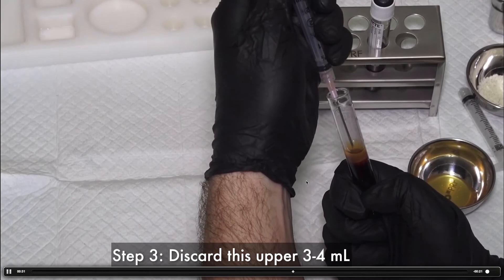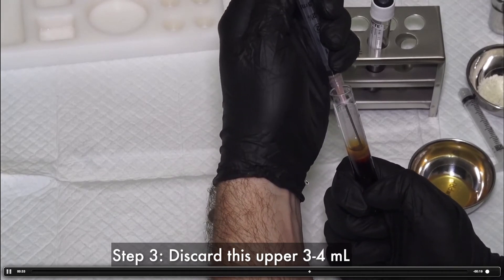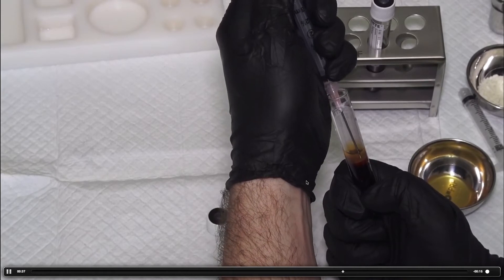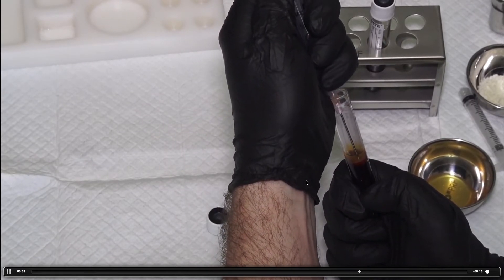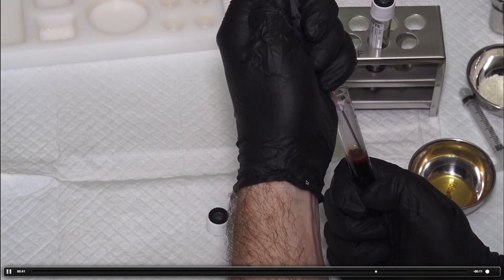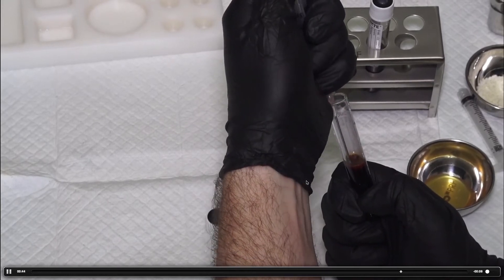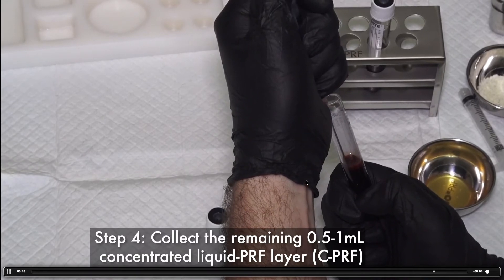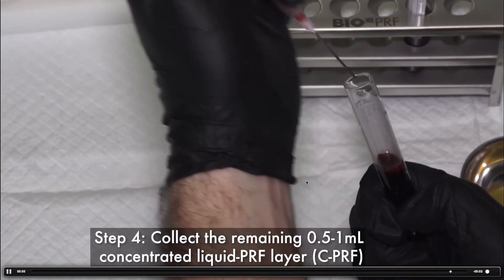So you remove the upper platelet poor layer. Then when there's 0.5 to 1 mL left of the very rich, the concentrated PRF, you're then going to draw this up and this is going to be about 0.5 to 1 mL, somewhere in there. That's where all the cells are. That's going to be a lot more concentrated than the liquid I-PRF.